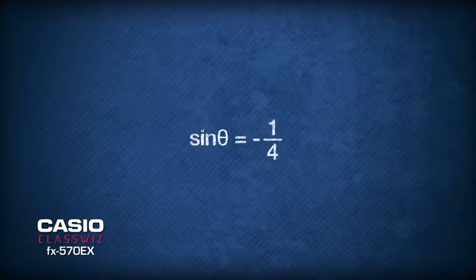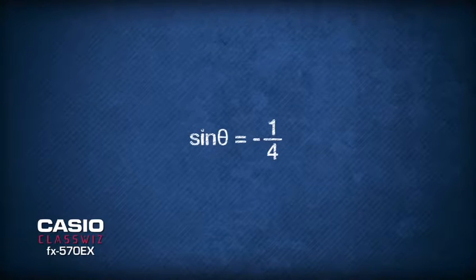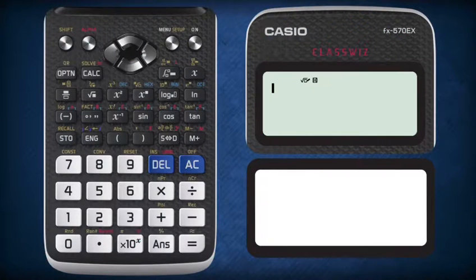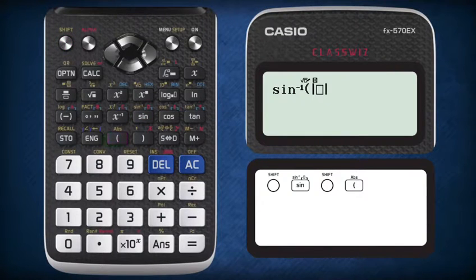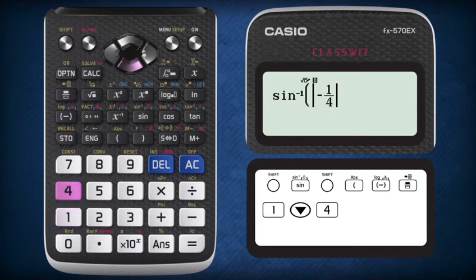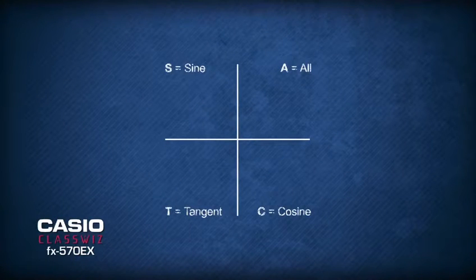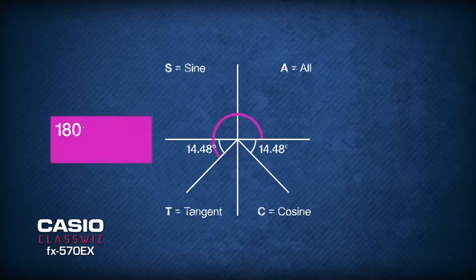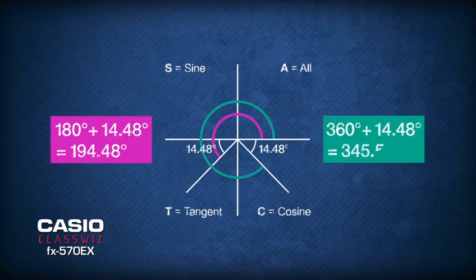To solve sinθ equals negative 1 over 4, we inverse the trigonometry to find the basic angle that generates the ratio of negative 1 over 4. To find this basic angle, we assign the absolute value of the ratio. On the Casio ClassWiz, press shift followed by the sine button, then press shift again and open bracket to insert the modulus. Insert negative 1 over 4 into the bracket and press equal. The basic angle is 14.48 degrees. Based on ASTC of the 4 quadrants, a negative sine ratio lies in the 3rd and 4th quadrant, so theta is either 194.48 degrees or 345.52 degrees.